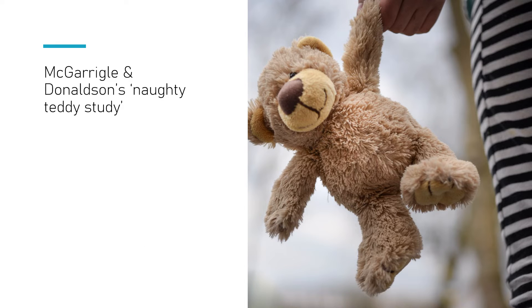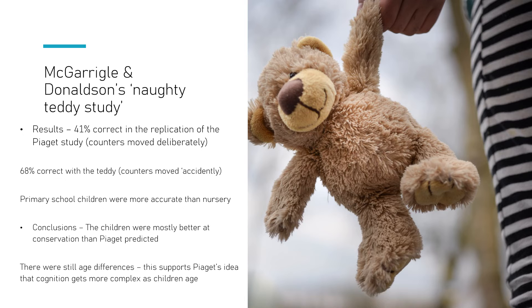So what they found when doing this is actually this did change children's response to the questions. In the Piaget study, they recreated it without the naughty teddy, they did it normally with the researcher changing it, and 41% of the children got the correct answer. However, when it was the naughty teddy that was messing up the counters, more got the answer correct. So 68% were correct in the teddy condition when they thought the counters were moved accidentally by a naughty teddy.